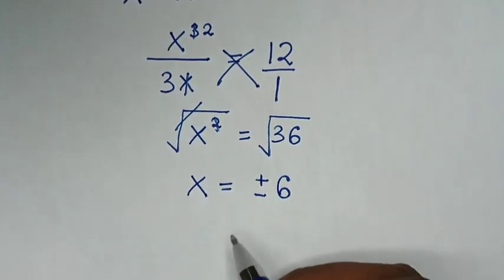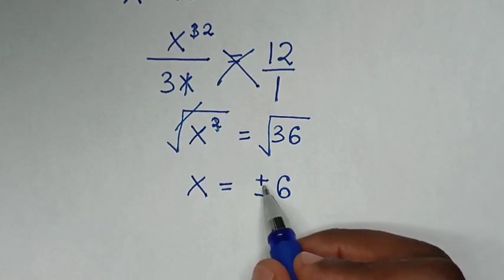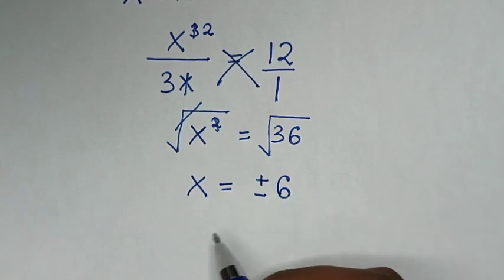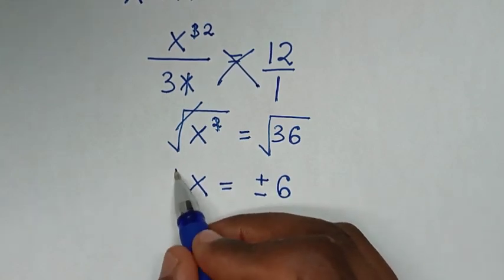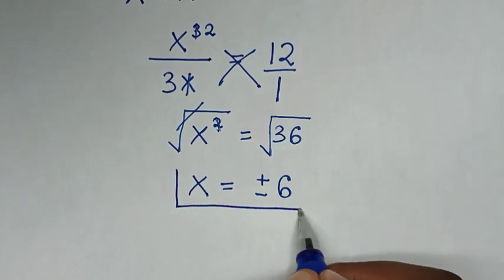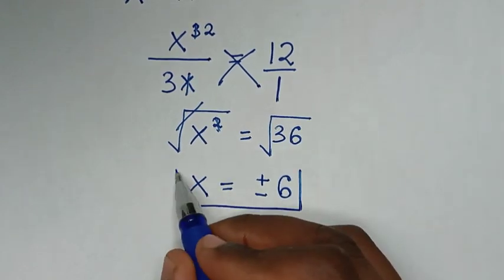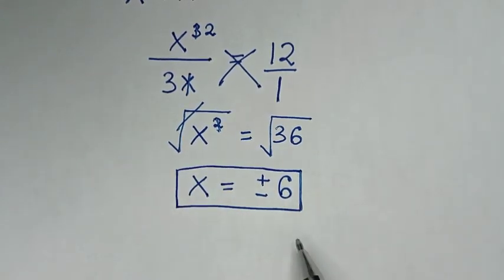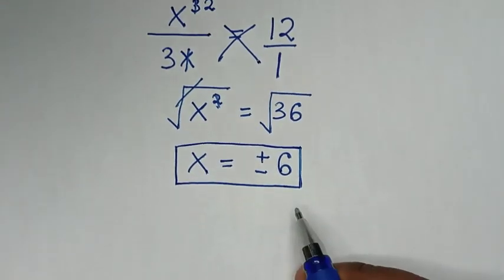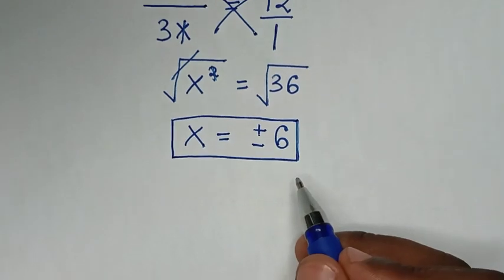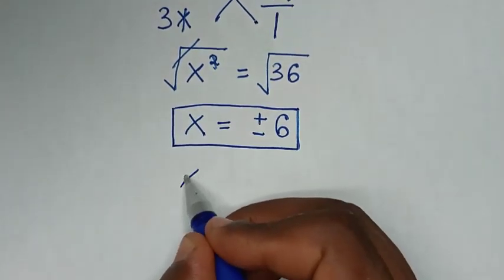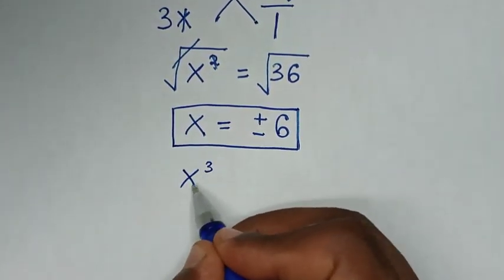The square root of 36 is plus or minus 6. So here we have two solutions which are positive 6 and negative 6. Therefore this is our final answer.